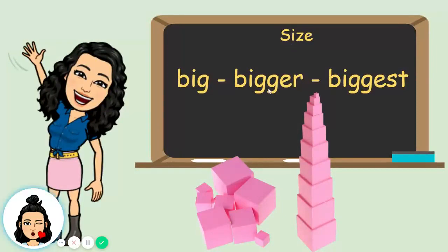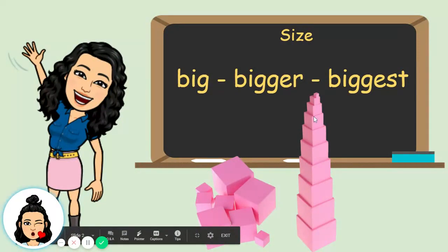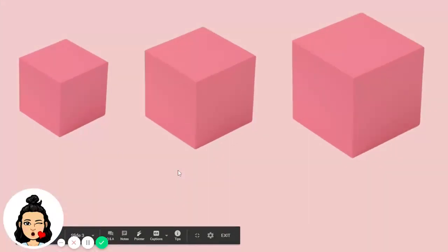We have big, bigger, and biggest. I have here a pink tower. A pink tower consists of pink cubes in different sizes. I have here three pink cubes.